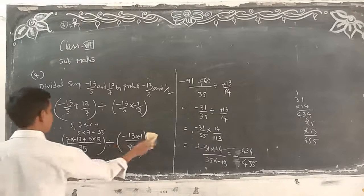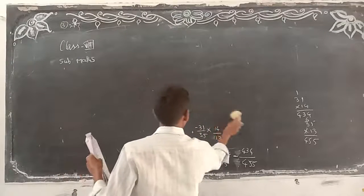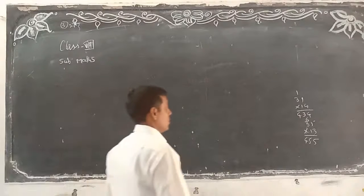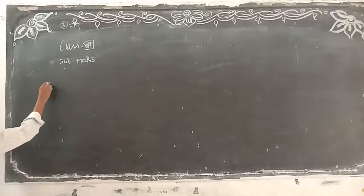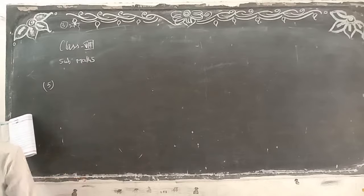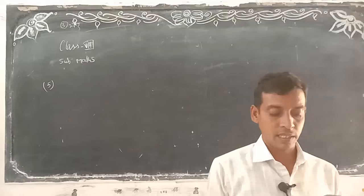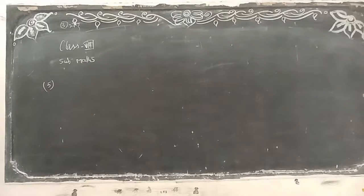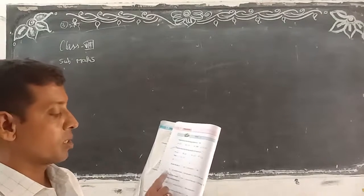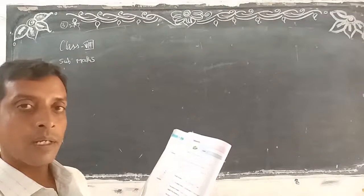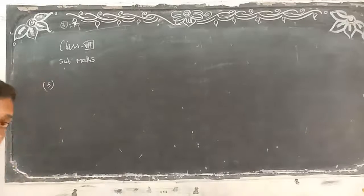Fifth one. Look here: if two-fifths of a number exceeds one-seventh of the same number by thirty-six, find the number. This is homework — try it. Exceed means: two by five minus one by seven is equal to thirty-six. So, two by five minus one by seven equals thirty-six, where x is the number you have to find. Do the homework. If you don't get it, message me.